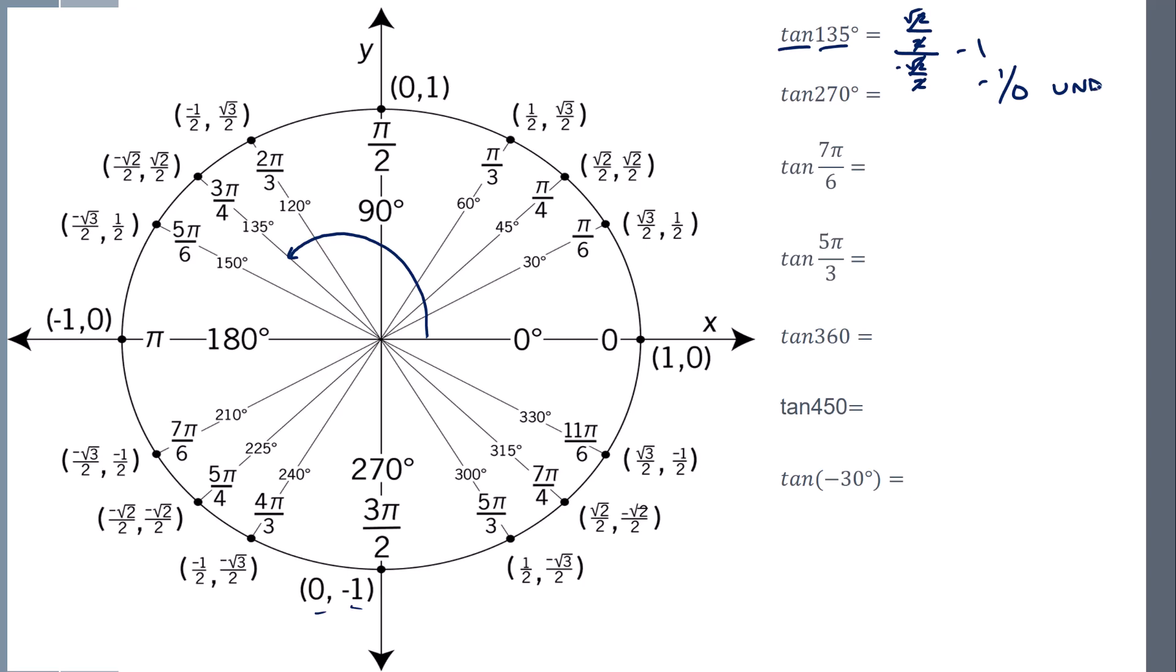Tangent is 7 pi 6, so we rotate over to 7 pi 6, y over x. The 2's cancel out, so I'm going to get 1 over root 3, and the negatives also cancel out. And then now we rationalize it. So root 3, root 3, so it's going to be root 3 all over 3.